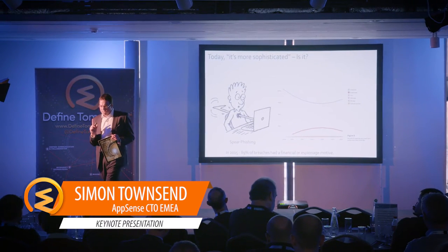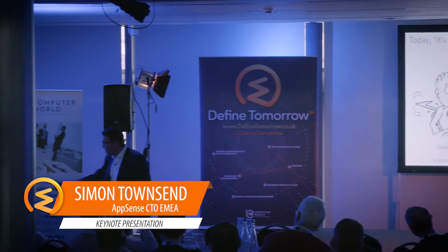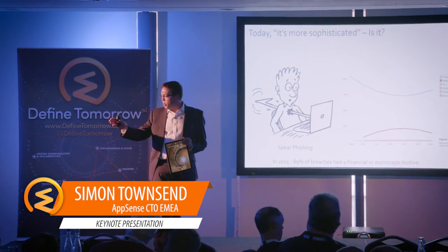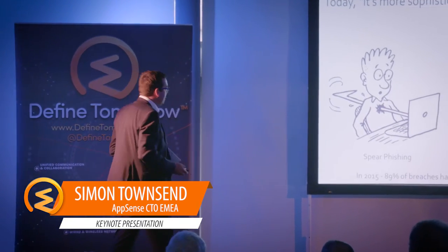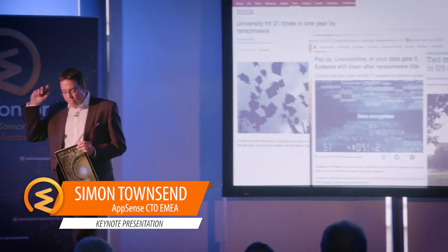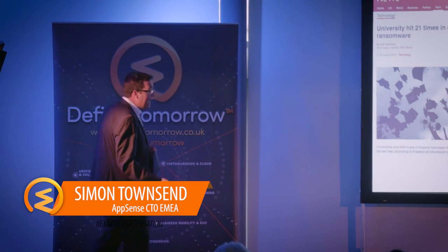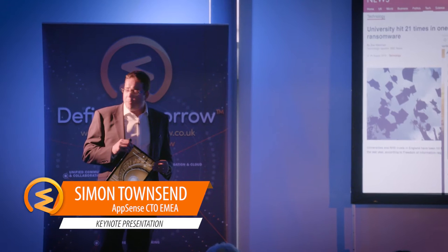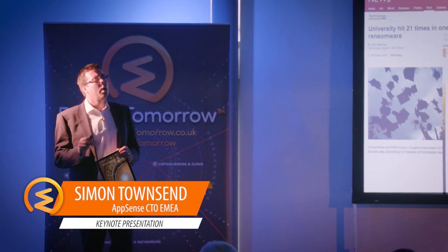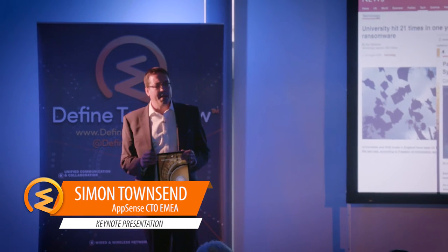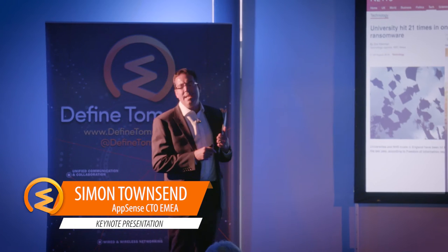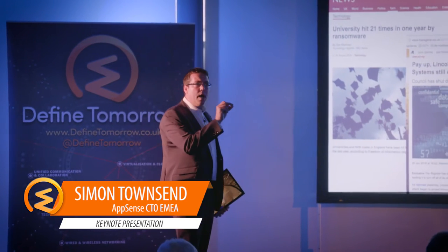The ransomware out there today is no more complicated than it was back in 1999. It still comes through via email, it's still an attachment — just an unknown executable that downloads a payload, zips up all of your data, and holds you to ransom, wanting some Bitcoins. The sophistication is in how it picks on you using social engineering techniques — 'Dear Lee, thanks for listening to my presentation this morning, here's a copy, double-click.' It happens on a daily basis to far too many organisations.